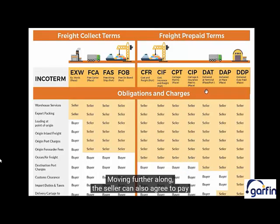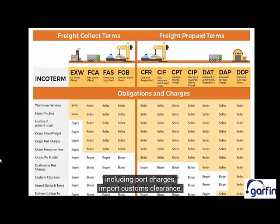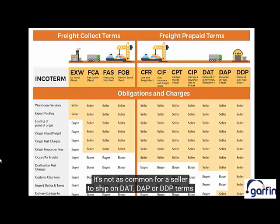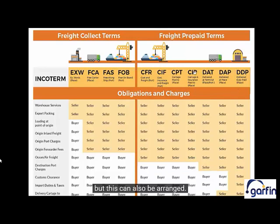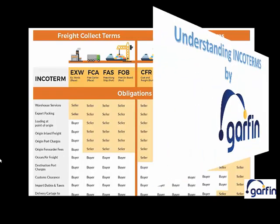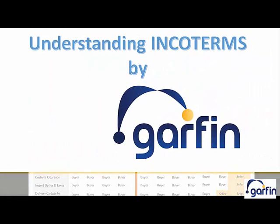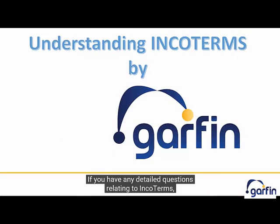Moving further along, the seller can also agree to pay for the local charges associated at the port of destination, including port charges, import customs clearance, and local import duties and taxes payable on the goods to import. It's not as common for a seller to ship on DAT, DAP, or DDP terms, but this can also be arranged. If you have any detailed questions relating to Incoterms, you should refer to your freight forwarder. Thank you.